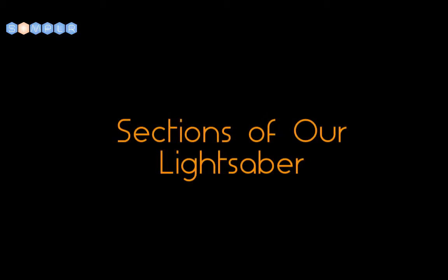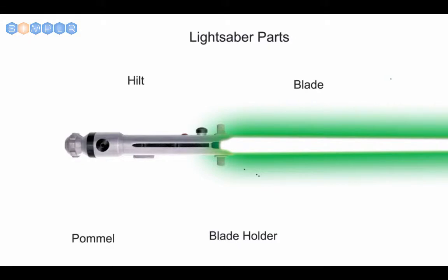Let's talk about the sections of our lightsaber. Here we see an image of a typical lightsaber — one like Obi-Wan's or Luke Skywalker's. This information will come in handy in later videos where we'll refer to all parts using the names you see here. As you look around on the internet, you'll be able to use these terms to gather more information about lightsabers. As you become more of an expert on building lightsabers, these are the terms that will be really important for understanding what's going on.